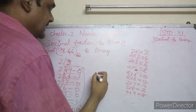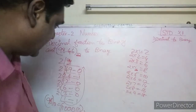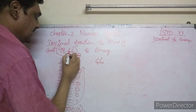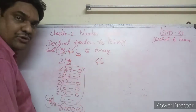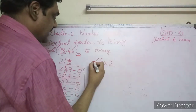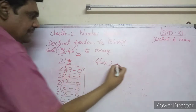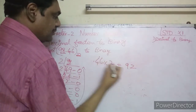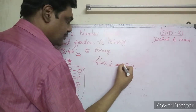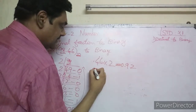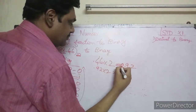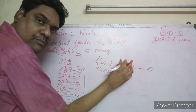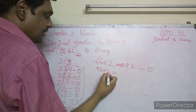Now for the fractional part 0.46: remember, for the fractional part you do not use division — instead you multiply by 2 repeatedly. So 0.46 multiplied by 2 gives 0.92. The integer part is 0, so record 0.